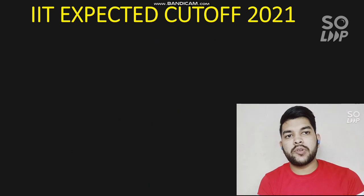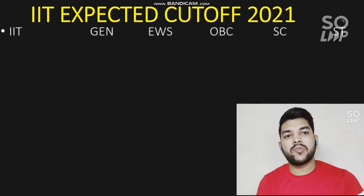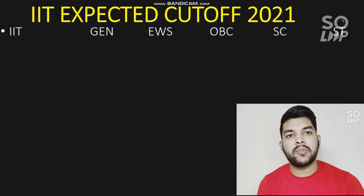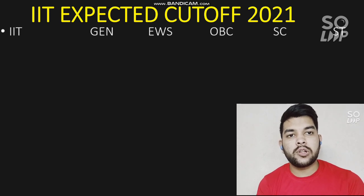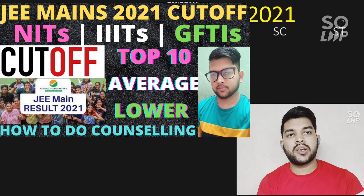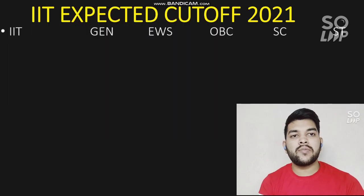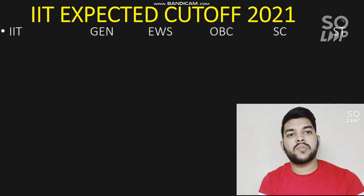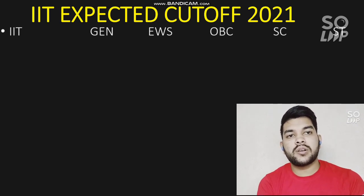Here is the expected IIT cutoff for 2021 — the expected marks versus expected IIT. For PWD candidates, I will try to provide a separate video very soon, similar to what I have provided for NIT, triple IIT, and GFTI especially for PWD candidates. If you haven't watched my previous video on expected cutoffs for NIT, triple IIT, and GFTI, you can check the info button or the link in the description box to estimate which NIT, triple IIT, or GFTI you might get if you haven't appeared in JEE Advanced.